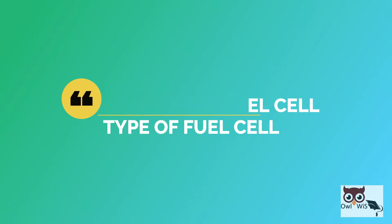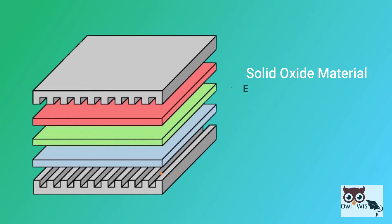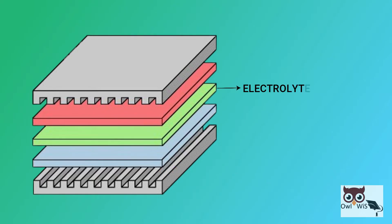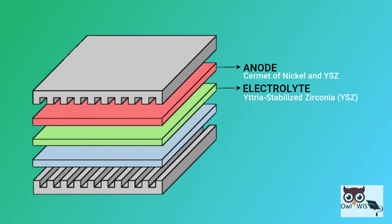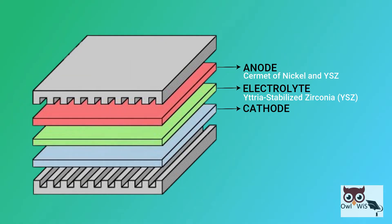Solid oxide fuel cells are characterized by the use of solid oxide material as the electrolyte to conduct negative oxygen ions from the cathode to the anode. They use a solid ceramic electrolyte such as yttria-stabilized zirconia. The most widely used anode is a cermet of nickel and yttria-stabilized zirconia. The cathode, or air electrode, is a thin porous layer on the electrolyte where oxygen reduction takes place.